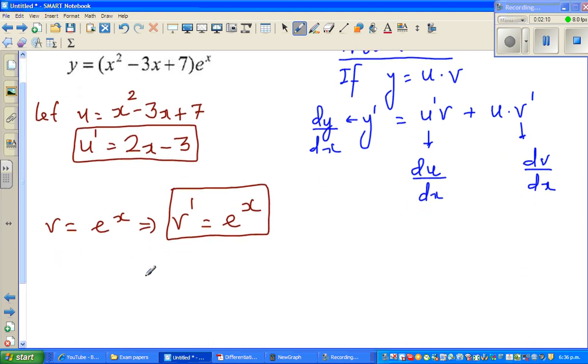So let me rewrite the formula. y prime, or y dash, is u prime times v plus u times v prime. Prime and dash are the same, I keep interchanging the words. So this is 2x minus 3 times e to the power x plus x squared minus 3x plus 7 times e to the power x.